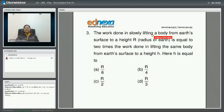The work done in slowly lifting a body from earth's surface to a height R, that is the radius of earth, is equal to 2 times the work done in lifting the same body from earth's surface to height h.